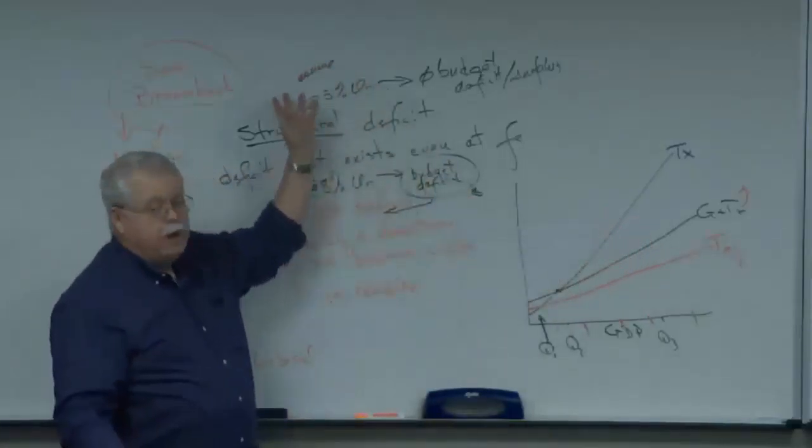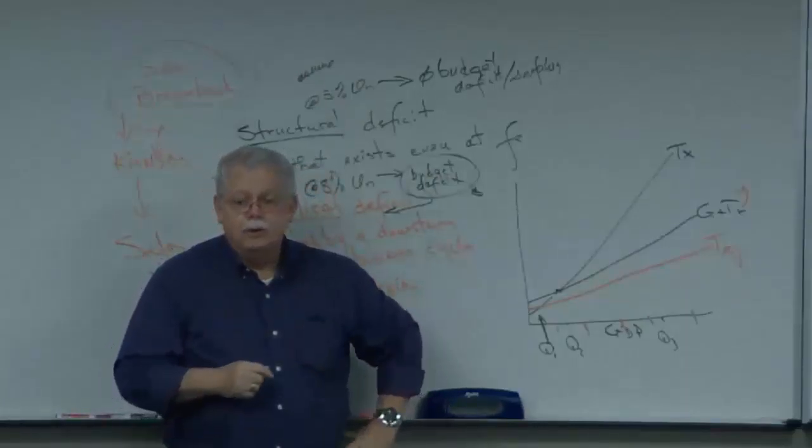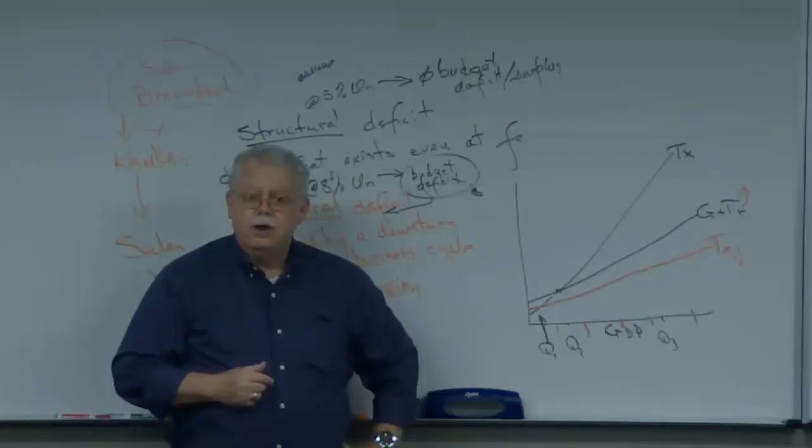And if it's good for people to be fiscally responsible and not spend more than they make, and this is what classical economics continually does, then it must be correct for macro, for government, not to spend more than they make. Do you see a fallacy or an error there?